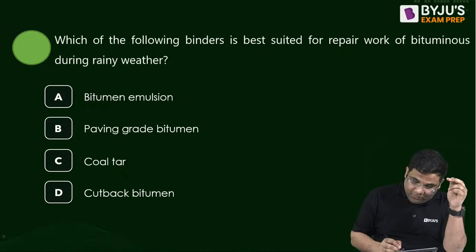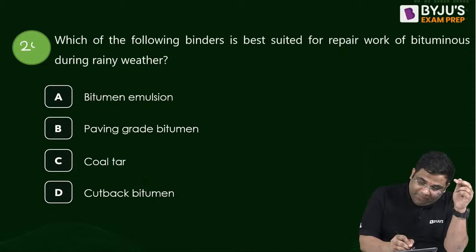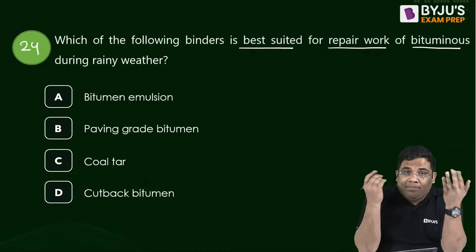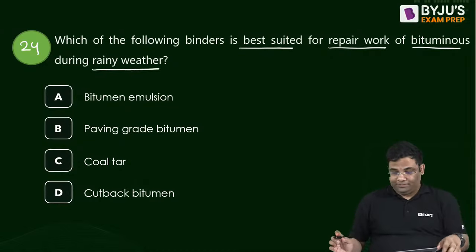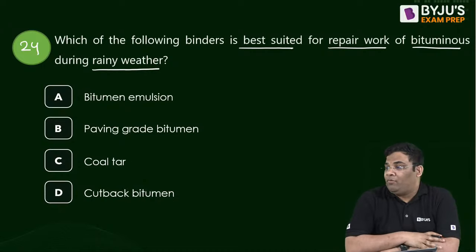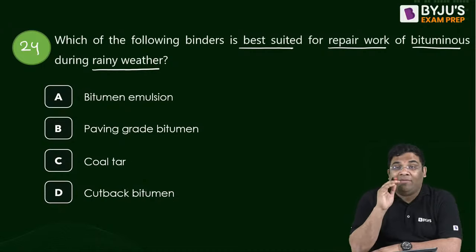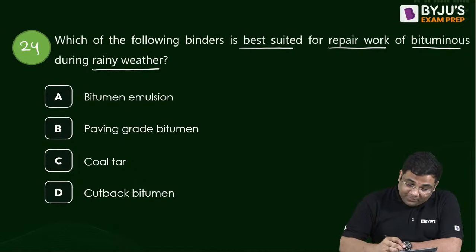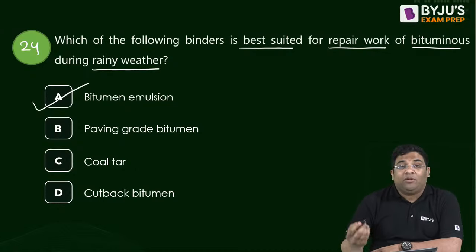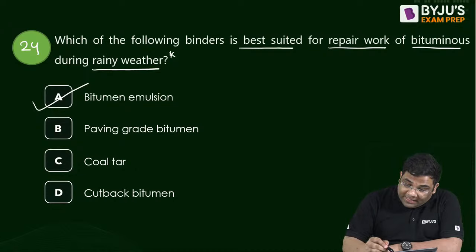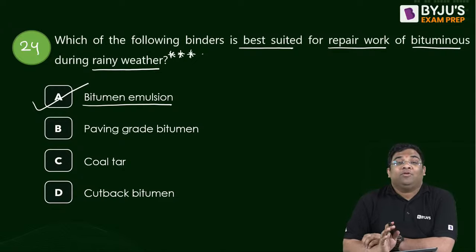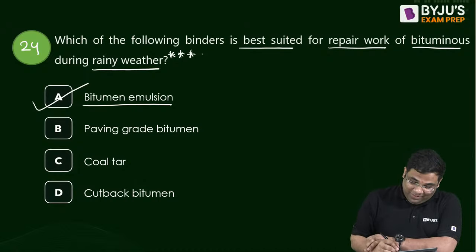Question 24: The best binder for repair of bituminous pavements during rainy weather is bitumen emulsion. Cutback bitumen is also used for repair, but during rainy weather, bitumen emulsion is preferred because there is no need for heating — just mix and apply.